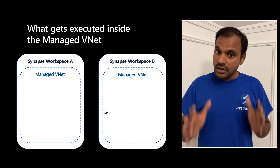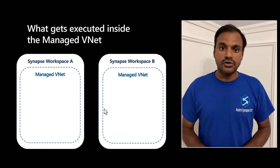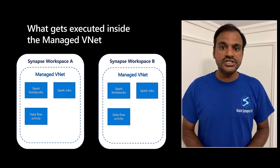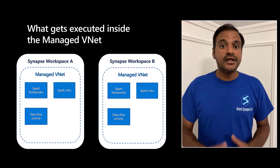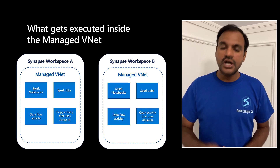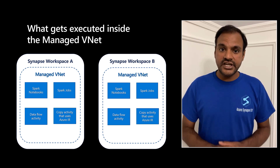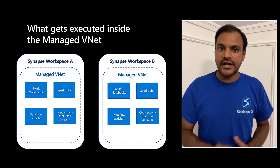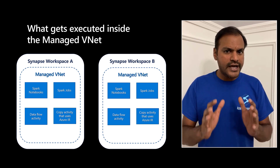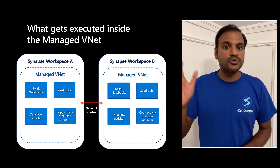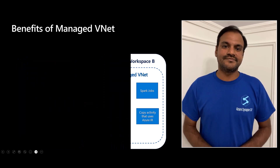Azure IRs can be used to execute copy activity inside the Synapse pipelines that perform data movement at scale. They can also be used to dispatch and monitor other data transformation activities in the Synapse pipelines that get executed on various other compute resources. When a managed VNet is enabled, all the Spark workloads using the Spark clusters and the copy activity using the Azure IRs are executed inside the managed VNet, fully isolated from other Synapse workspaces.